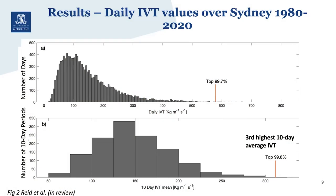Instead, we looked at the 10-day mean, because what was interesting about this event was that it stuck around for a long time. We found it had the third highest 10-day average IVT period in this 40-year record. Although any given day wasn't super intense, we had 10 consecutive above-average days, and that's why there was such extensive damage.